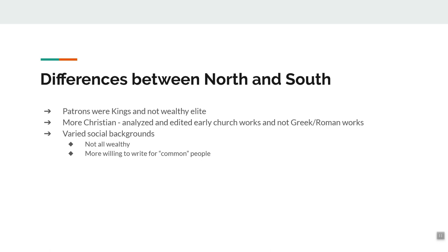There were differences between the northern and Italian Renaissance. In Italy, most patrons were the wealthy elite; in northern Europe, they were mostly kings. There was more Christian value in the northern Renaissance. Where Italy reevaluated Aristotle, Plato, and classical Roman and Greek ideas, the northern Renaissance went back to early church works by St. Peter, St. Paul, and similar figures. There was also more variation in social backgrounds in the north — not everybody was wealthy — so northern Renaissance thinkers wrote more for common people. The northern Renaissance: more Christian, more for the everyday person. The southern Renaissance: less Christian, more for the wealthy elite.